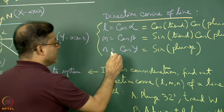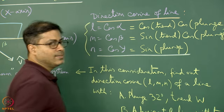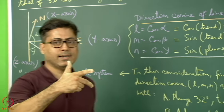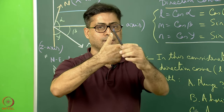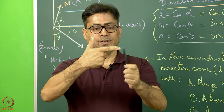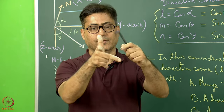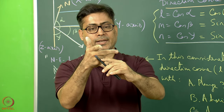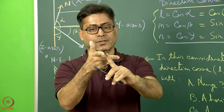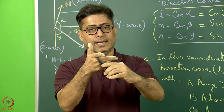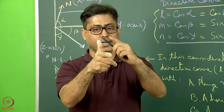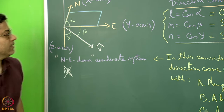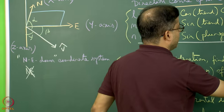Out of these three expressions, this one is the easiest and can be easily understood. Imagine these are the three coordinate axes and here is a line. So what is alpha? This is the x-axis, north direction. The line and this finger make angle alpha. This is the east direction, so with east and the line making angle beta, and the line is making angle gamma with the thumb, the vertical axis.